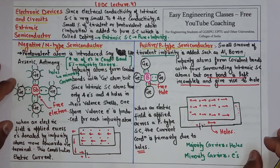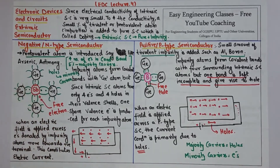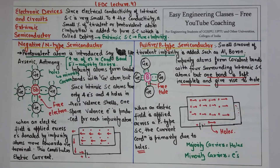So this was the extrinsic semiconductor — we have seen both n-type and p-type. You can compare both of them. Thank you for watching the video. Please subscribe to my YouTube channel for more such tutorials.